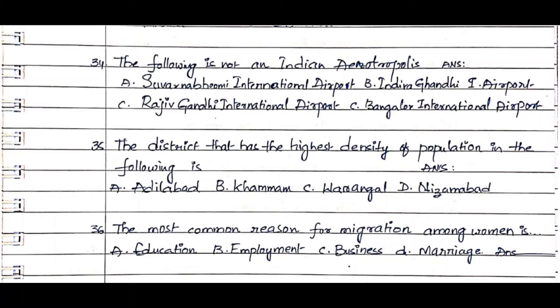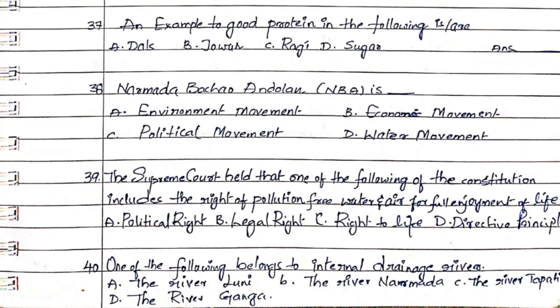Question 36: The most common reason for migration among women is. Option A. Education, Option B. Employment, Option C. Business, Option D. Marriage. The answer is Option D. Marriage.